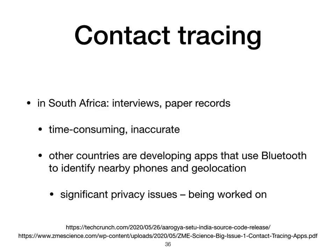On to contact tracing. In South Africa it's been done essentially using interviews and paper records — time-consuming, not super accurate, and people don't remember everyone they met in the last few days. Other countries are taking a more technological solution using Bluetooth — a short-range form of communication between phones including some unsophisticated ones — and geolocation. There are privacy issues, but there's a lot of work going on in this area. India, for instance, has released the source code of the software they're working on, so it's not an area where we need to start from scratch.